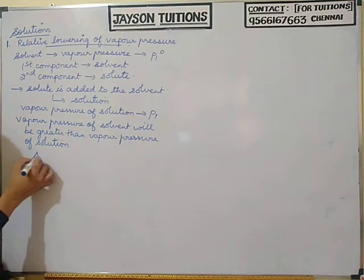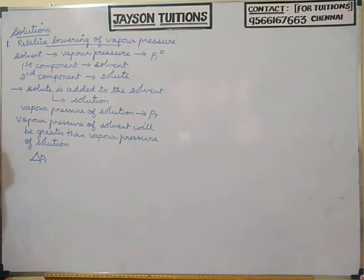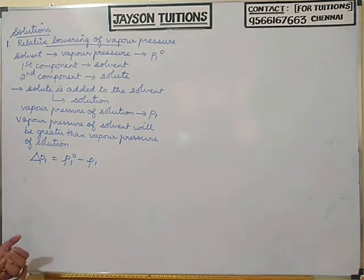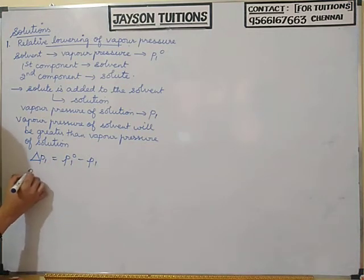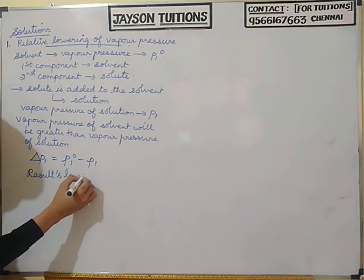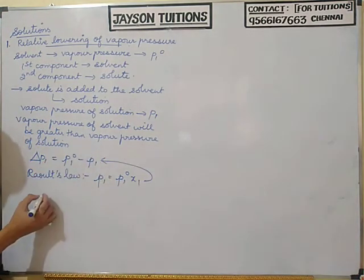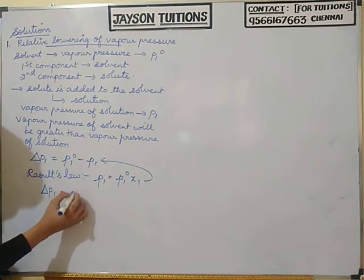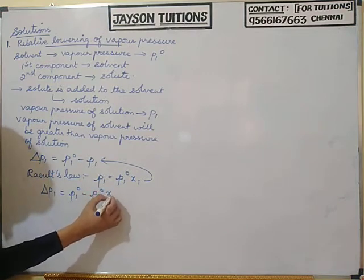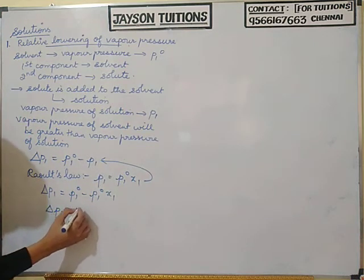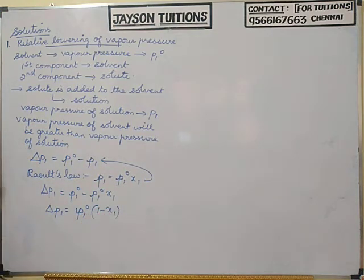The change in vapor pressure, delta P1, is equal to P1 naught minus P1. We have already studied Raoult's law: P1 equals P1 naught into X1. Substituting this, delta P1 equals P1 naught minus P1 naught times X1, and taking P1 naught common, we get delta P1 equals P1 naught into (1 minus X1).